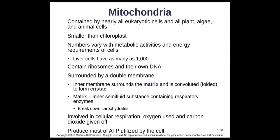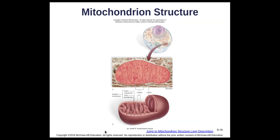The matrix of mitochondria contains cell respiratory enzymes that break down sugar — unlike the stroma of chloroplasts, which makes sugar. Mitochondria are the site of cellular respiration: oxygen is used, carbon dioxide is released, and ATP is produced as the energy source for the cell. This is why mitochondria are called the powerhouse of the cell.